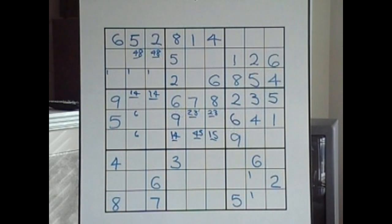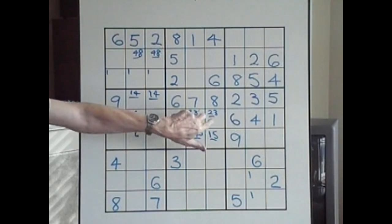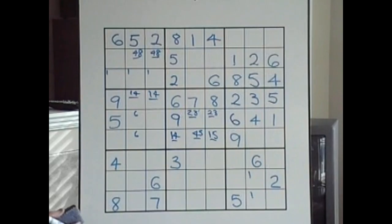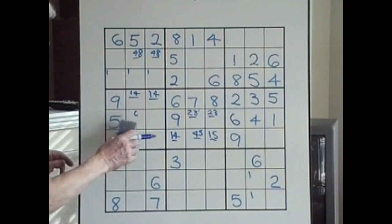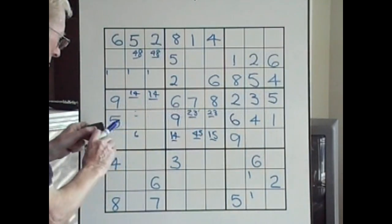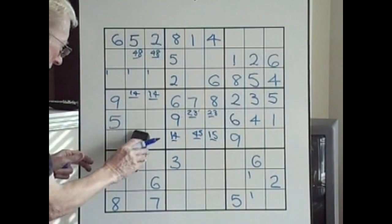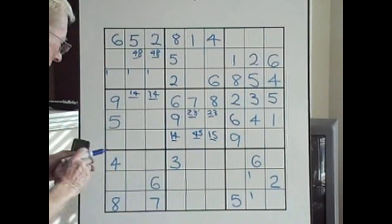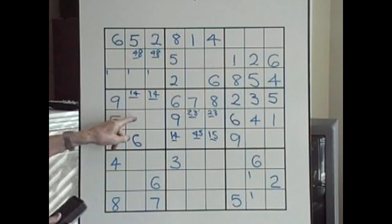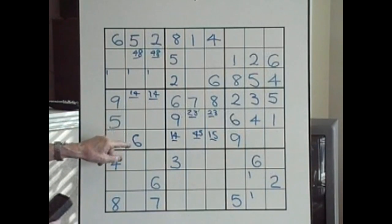We also have another matching pair somewhere here. Right away I see that there can't be a six there because that six cancels that. So this therefore becomes a six because we calculated that before — down here there could only be two sixes. So this is the real six.